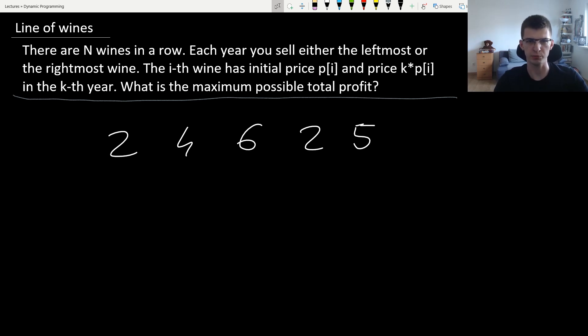We're given an array with prices. Here the leftmost wine would have price 2, then 4 and so on. This is the initial price, the one that could be used if we sold this wine in the first year, but then it grows.